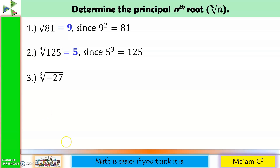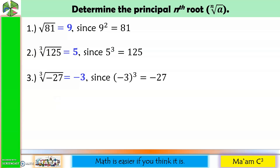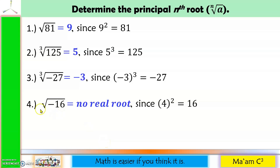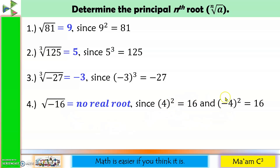Next, cube root of negative 27. Our index is odd and our radicand is a negative number, so we have one possible root and that is a negative root. The answer is negative 3, since negative 3 cubed is equal to negative 27. Negative 3 times negative 3 is positive 9, and 9 times negative 3 is negative 27. Number 4 is square root of negative 16. Our index here is 2 and our radicand is a negative number, so there is no real root. Since there is no number that when raised to an even exponent will give you a negative number, there is no real root.